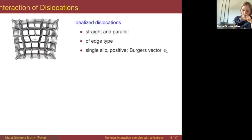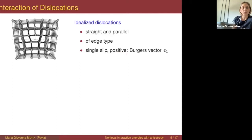I'm going to consider a further simplification: I assume that all these locations have the same Burgers vector E1 — they are all positive, they have the same sign. This means that these extra half-planes of atoms producing the defects are all in the top part of the crystal.